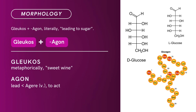Glucagon literally means leading to sugar. It's a compound of glucose and agon. Glucose metaphorically means sweet wine, and agon means lead — derived from the Latin verb agere, to act. There you have it — Glucose and Glucagon compound terms.